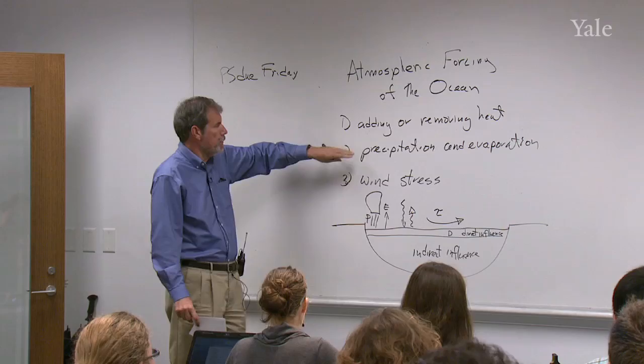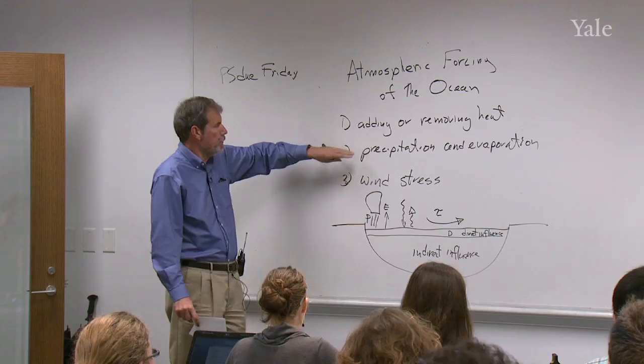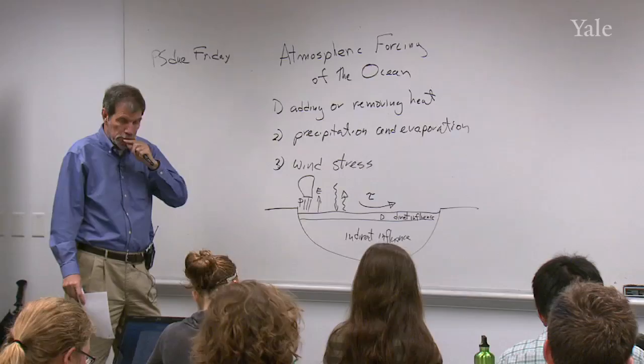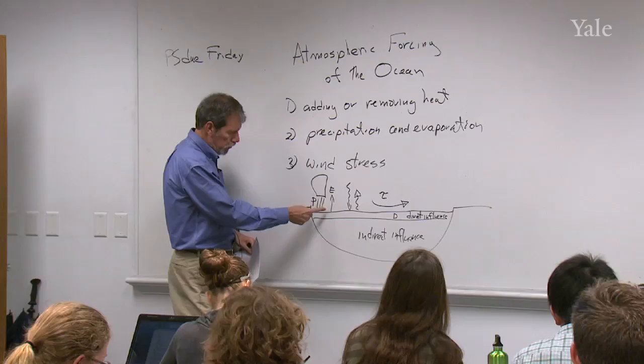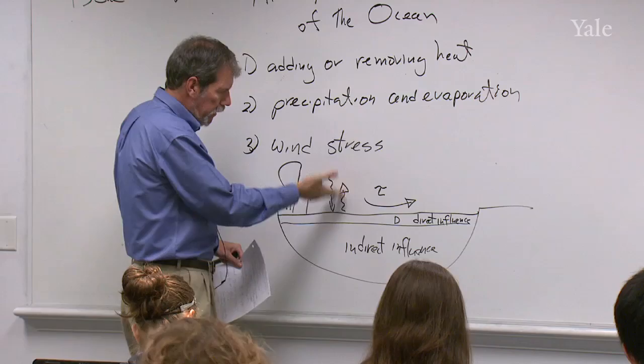So here I've repeated those three ways in which the atmosphere forces the ocean, adding or removing heat, precipitation and or evaporation, and the wind stress. Now, I want to make a further distinction from this. So I've drawn a little cartoon down here. Here's a cloud that's precipitating, adding fresh water to the surface of the ocean. There's some evaporation. That's this one. Here's some heat being added or removed, either by radiation or by the effect of the atmosphere itself. And here's the wind stress. I'm going to use Greek letter tau to represent that.